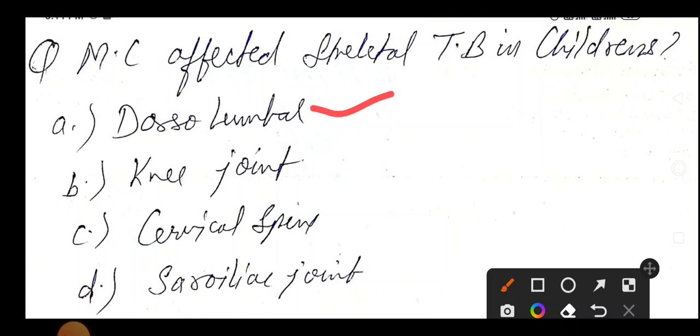Okay, but here is a twist. They are asking in children. So children start from C. So which answer is best? It's cervical spine. If they ask in adults, then dorsal lumbar. If they ask in children, cervical spine.